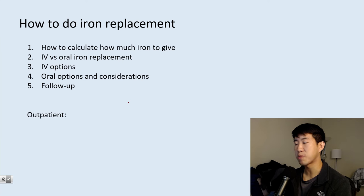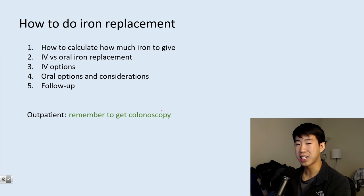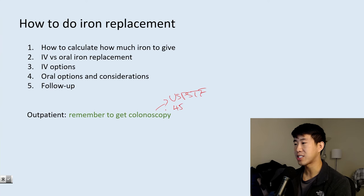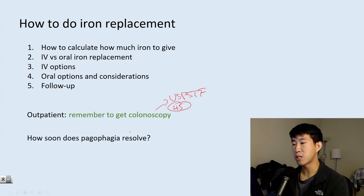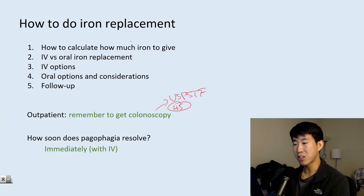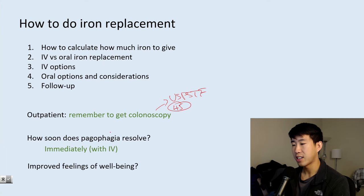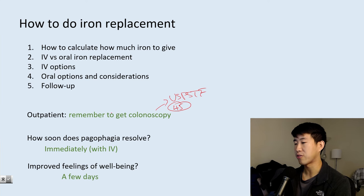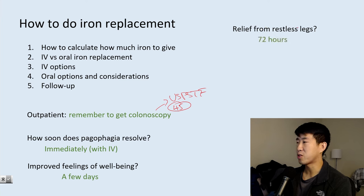For follow-up: all patients with iron deficiency anemia and no clear source should get a colonoscopy. The USPSTF recommends colon cancer screening as a grade B recommendation starting at age 45. Regarding symptom resolution: pagophagia (pica — the desire to eat ice or other hard things) resolves immediately with the first dose of IV iron. Improved feelings of well-being generally take a few days. Relief from restless legs takes about three days or 72 hours.